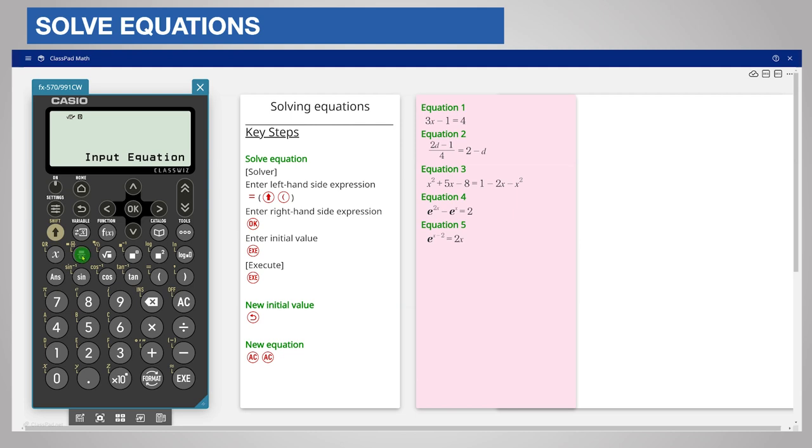Enter the fraction with the fraction key and enter the numerator 2d which is shift 1 minus 1 and then the denominator 4. Scroll right out of the fraction, enter equals as before with shift open bracket, and then the right hand side of the equation 2 minus d.